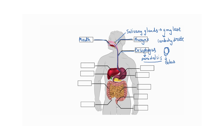The next organ is the stomach. The stomach basically acts like a storage organ. It produces a digestive juice called gastric juice, which contains hydrochloric acid. Hydrochloric acid acts on food and breaks proteins.